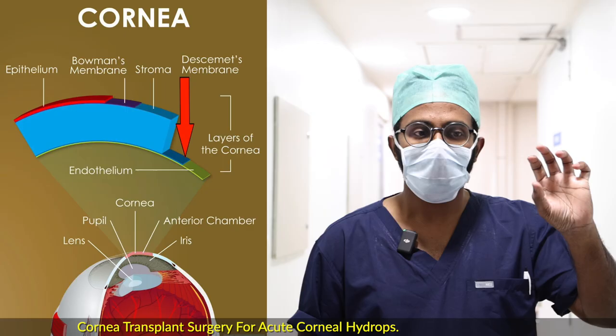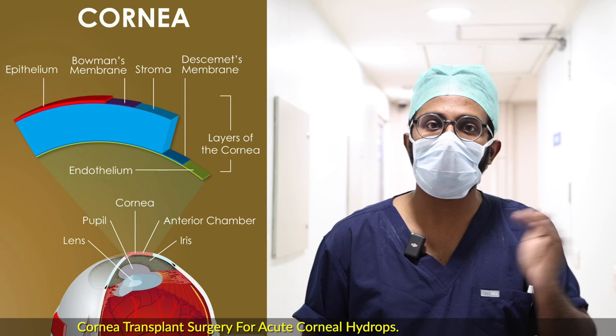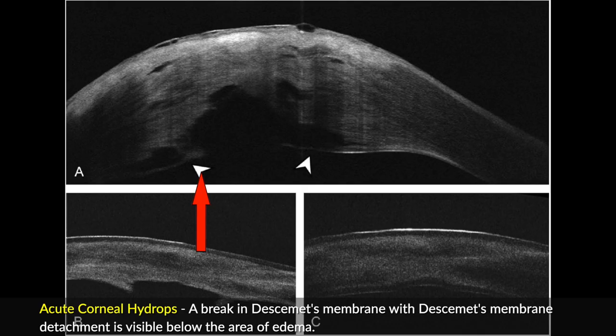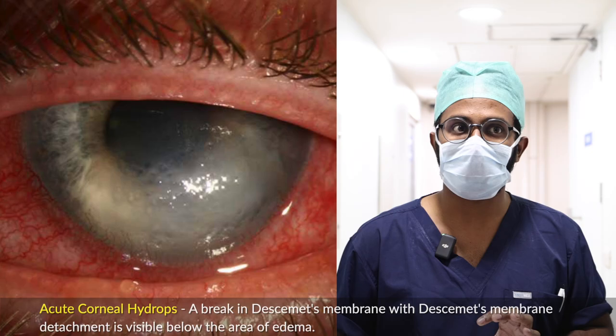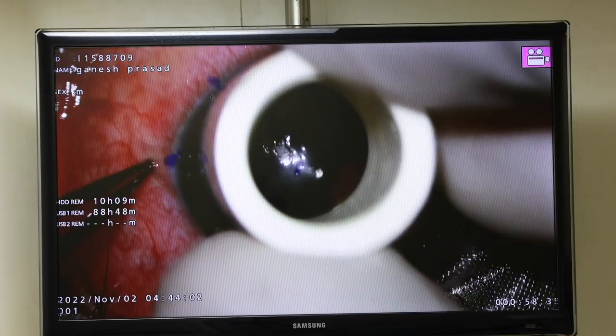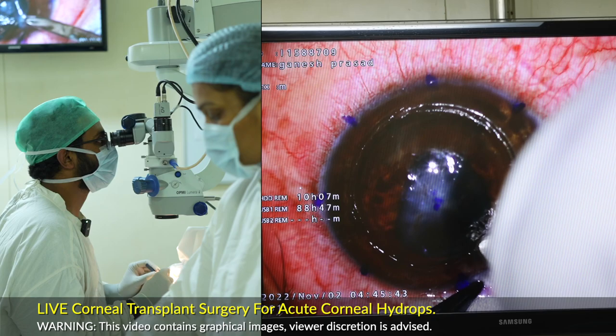What does this mean? It means that the best layer — the Descemet's membrane — is ruptured. What does it mean? It means that the water in the eye goes into the cornea and becomes a scar. We call it hydrops. The patient has been treated for the acute hydrops.